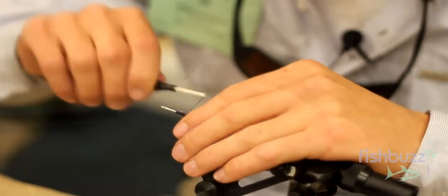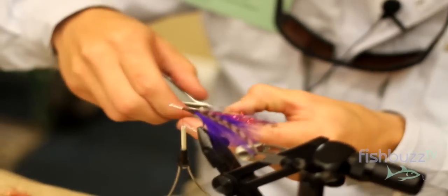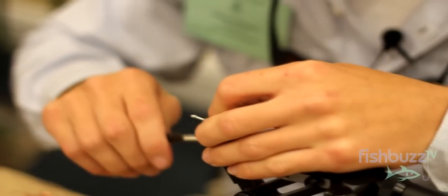After I get the feathers splayed out the back, I'm going to add two of these nice red EP eyes. They give it a real shrimpy, crabby look. I'll wrap that up towards the marabou.